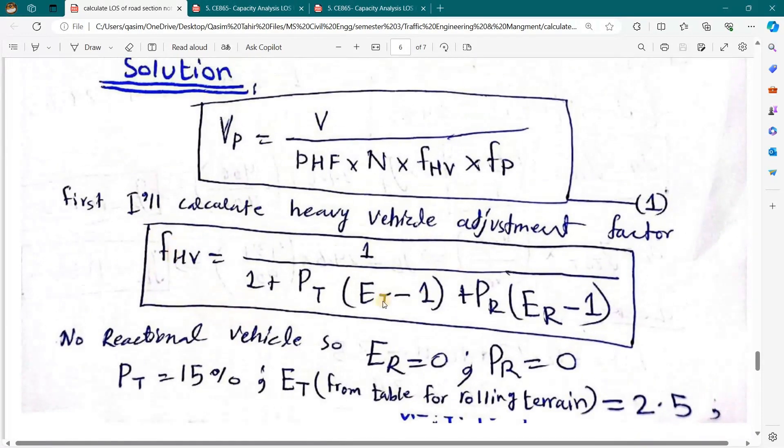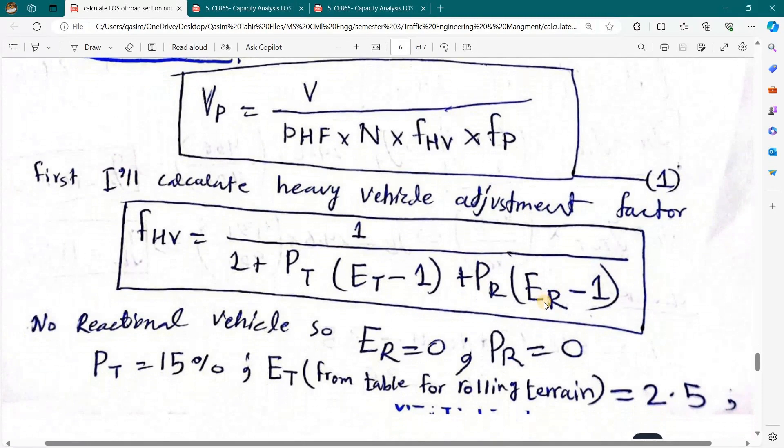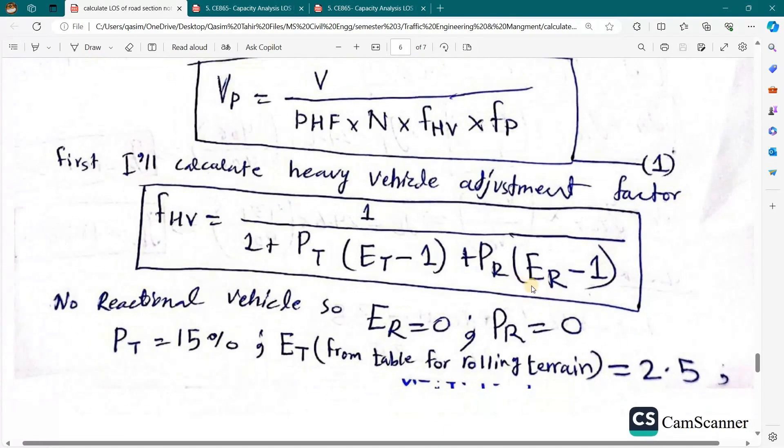And this is the formula to calculate heavy vehicle adjustment factor. Here we have PT, percentage of trucks, and ET means passenger car equivalent factor for trucks. PR is the percentage of recreational vehicles and ER is the equivalence of recreational vehicles to the passenger car. Now we go to the table to calculate values of